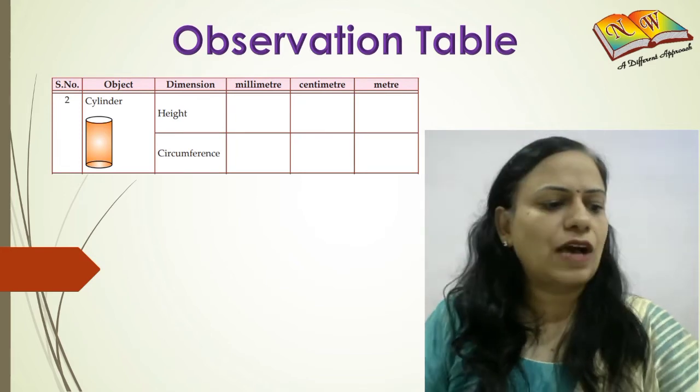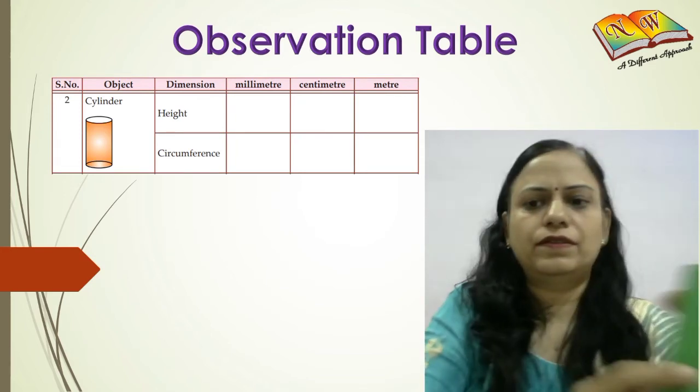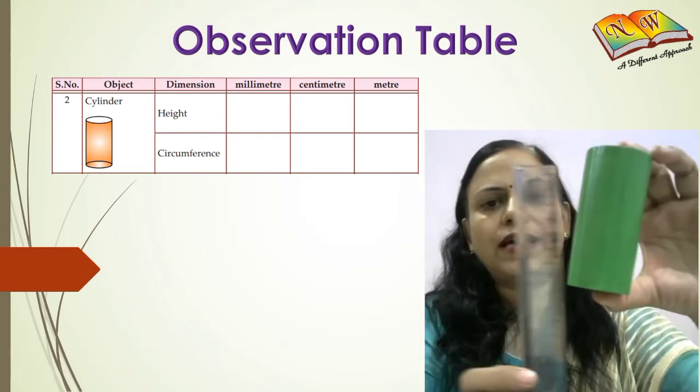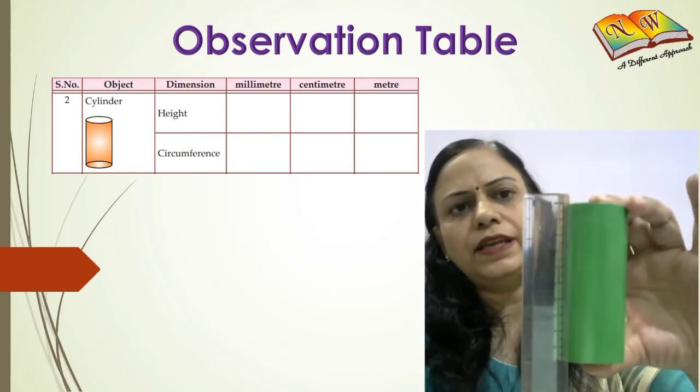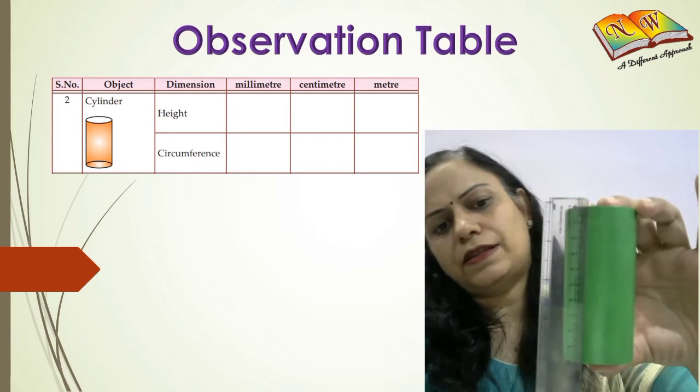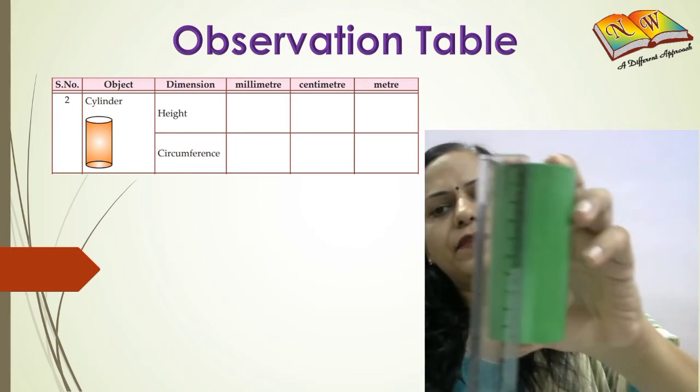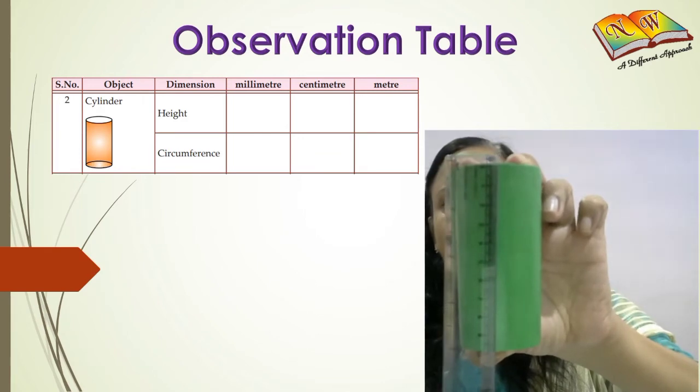Let us now check with the second object which is a cylinder. You can measure the height using the scale only, so I can see it's again 10. You can very clearly see it's corresponding to 10 centimeters as the height.